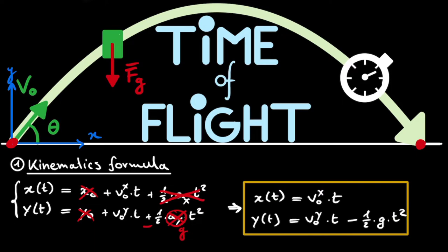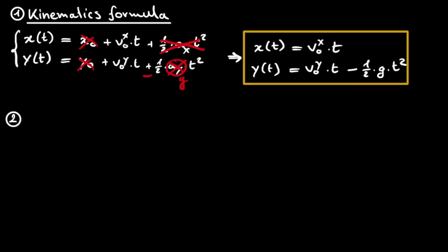However, there will be some time in the future where this y of t, so the height of the object, is also 0, namely when it reaches the ground again. And this is exactly the time that we're trying to find, the time of flight. To put it very concretely, to find the time of flight, we need to find t where y of t is equal to 0. And to find this, we look at the second equation here, but now with y of t is equal to 0.